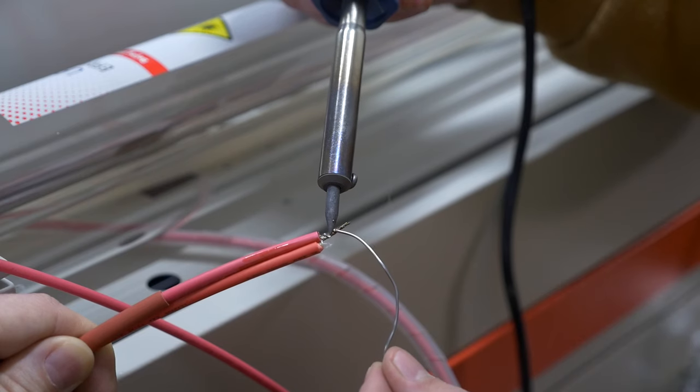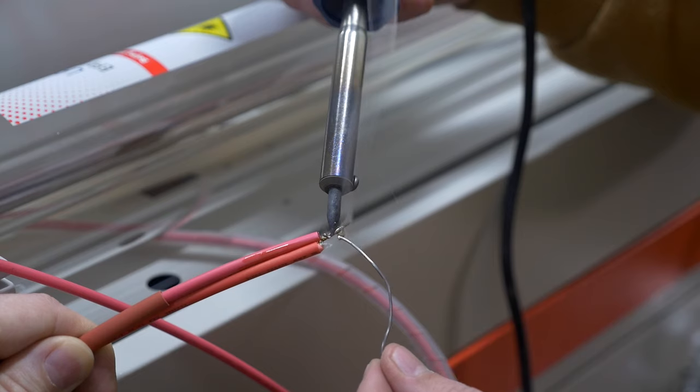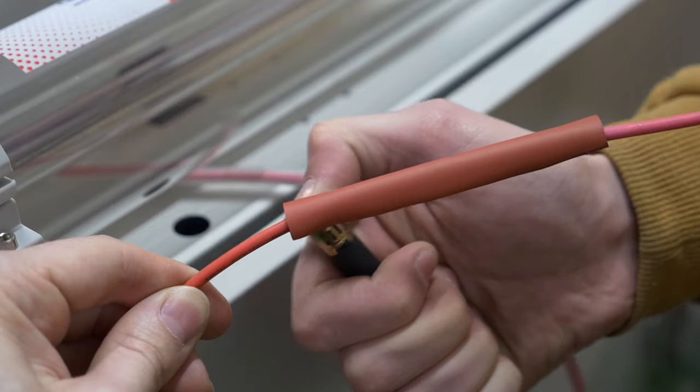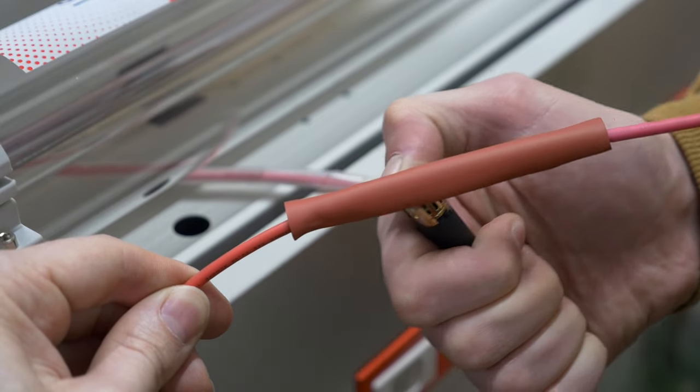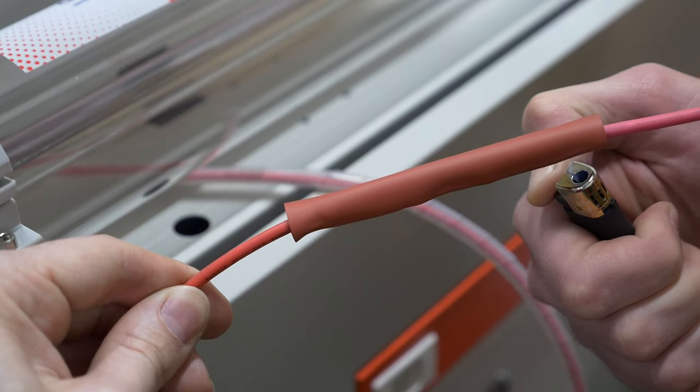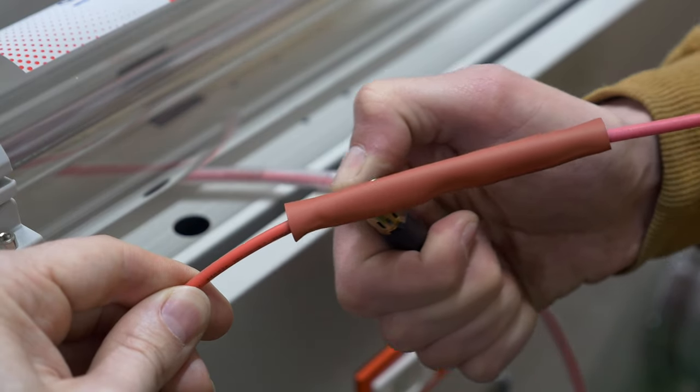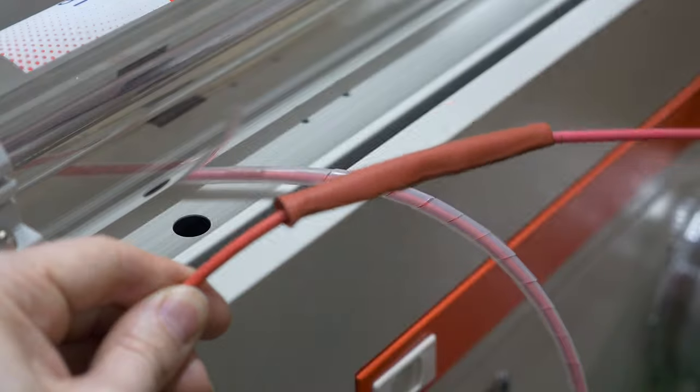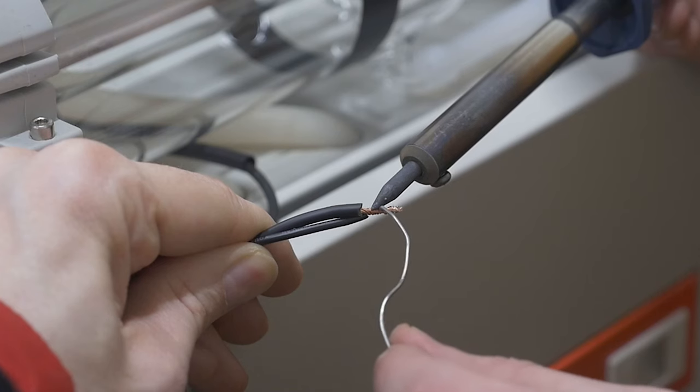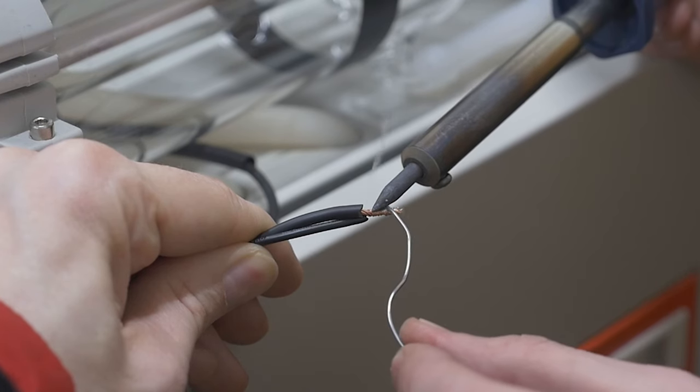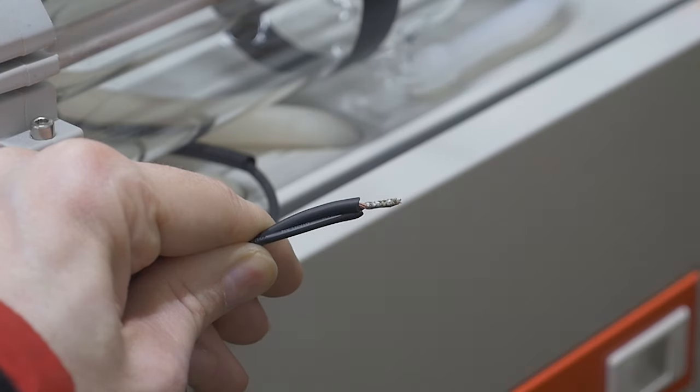If the sleeving kit is not included, you should insulate the junction point of red cables with high voltage electrical tape and silicon hose. The edges of the hose can be sealed with sealer. The black cable can be insulated with either black sleeving from the kit or black tape.